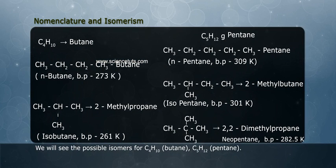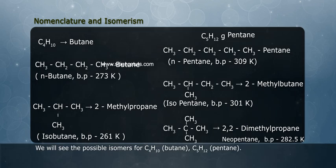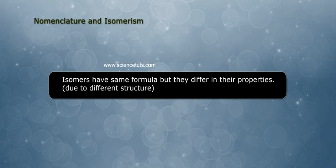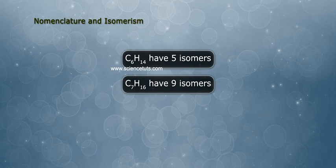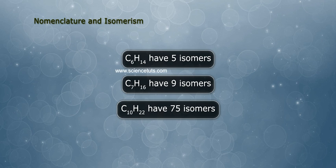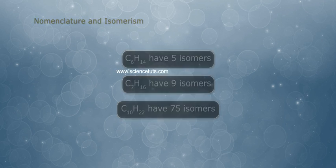We will see the possible isomers for C4H10 butane, C5H12 pentane. Isomers have same formula but they differ in their properties due to different structure. C6H14 have 5 isomers. C7H16 have 9 isomers. C10H22 have 75 isomers.